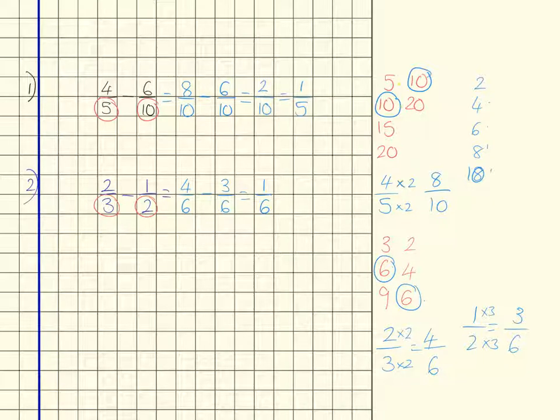Question 3 is 1 third subtract 1 quarter, so we're looking for multiples of 3 and 4 because the denominators are 3 and 4, so I'm going to write those out.